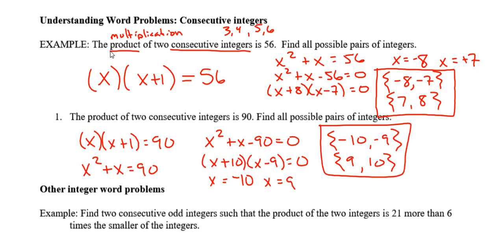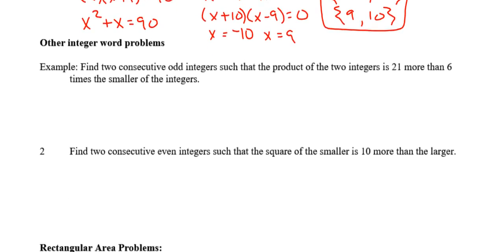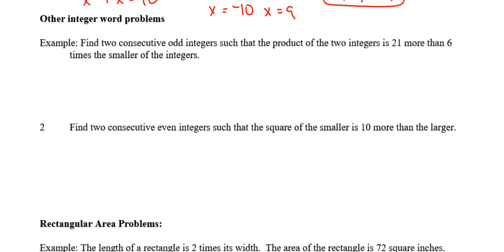Okay, you should have got the two consecutive integers of negative 10, negative 9, positive 9, positive 10. So that's the first example.